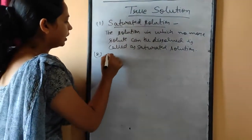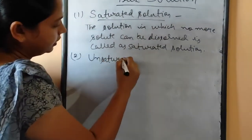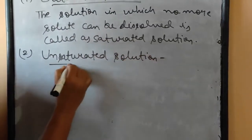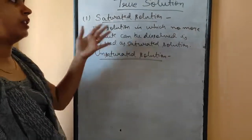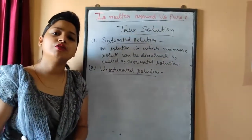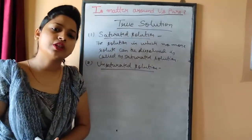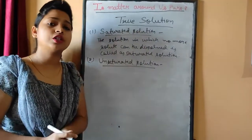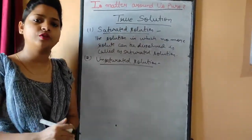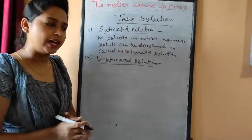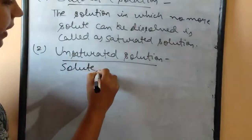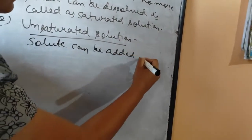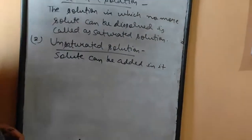Next is unsaturated solution. The name itself suggests it: if a saturated solution is one in which no more solute can be dissolved, then an unsaturated solution is one in which we can still add more solute — more particles can be added. In short, solute can be added to it. This is the unsaturated solution.